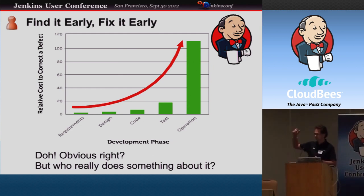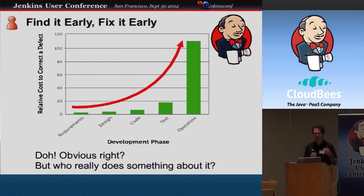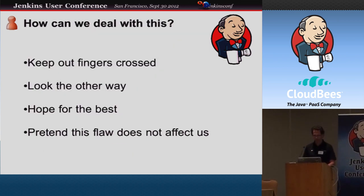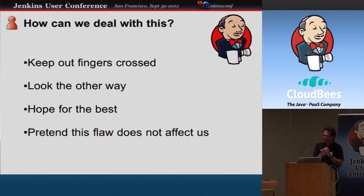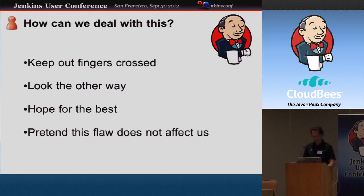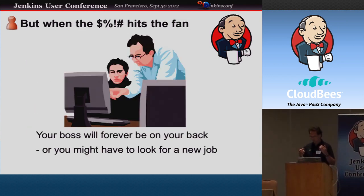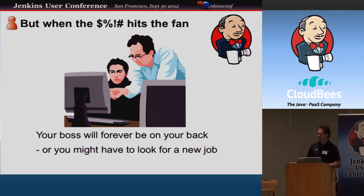It's obvious — why would you want to get something through QA and all that, into production, and then have to fix it when the customer is on the phone? But who really does something about it when it's so complicated to find out what's going on with these issues? How can we deal with this? We could keep our fingers crossed and hope for the best, or we could analyze that flaw and say 'yeah, I know it's not secure, but we're not using it that way.' But we hope you don't end up in a situation where your boss is forever on your back, or worst case, you have to look for a new job.